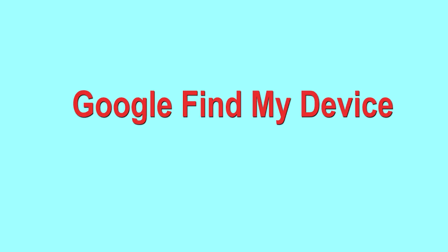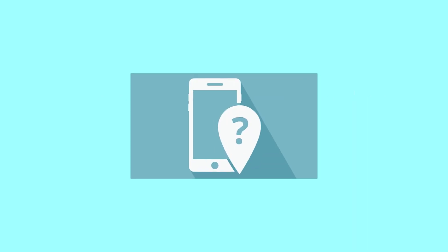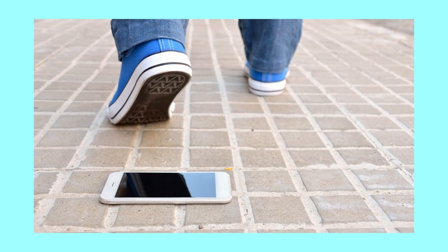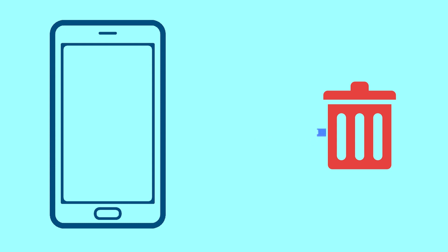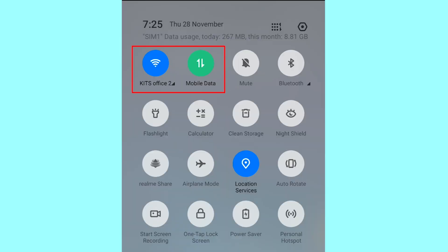Hard reset with Google Find My Device. This is the best method to reset your Android phone remotely. This method is useful when you lose your phone or are not able to access your mobile. This method also deletes all your Android phone data. After your device has been erased, you can't locate it. You can only use this method if you already added a Gmail account to your phone and have an active internet connection.